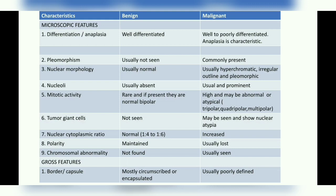Polarity refers to the orientation of cells. In a benign tumor, polarity is maintained, whereas in a malignant tumor cells lose their polarity. Additionally, chromosomal abnormalities are not found in benign tumors, but in malignant tumors you can see abnormalities in the chromosomes.